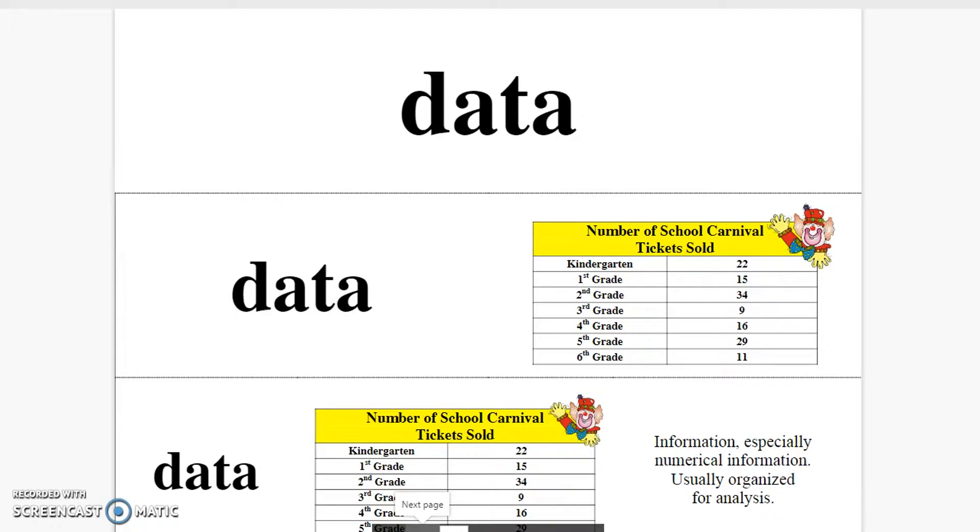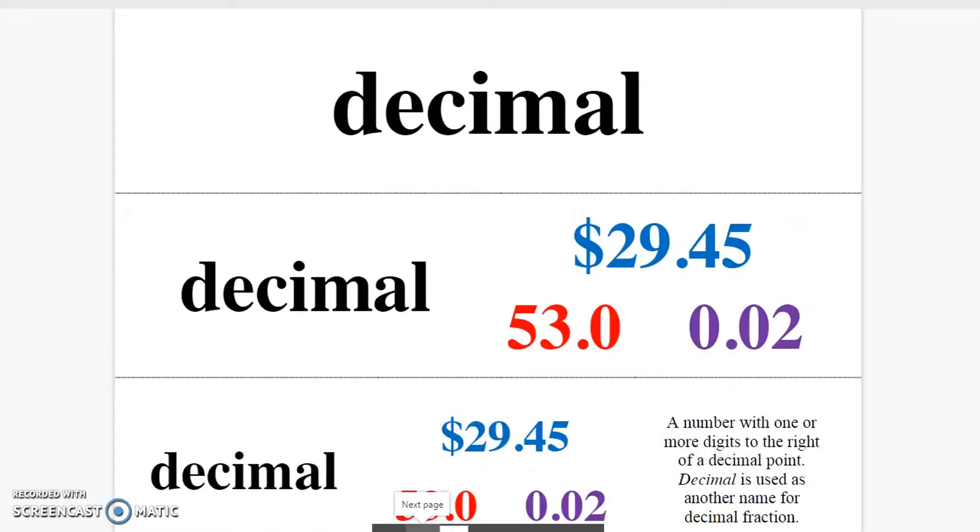Data. Information, especially numerical information, usually organized for analysis. Decimal. A number with one or more digits to the right of a decimal point. Decimal is another name for decimal fraction.